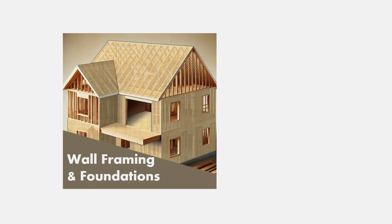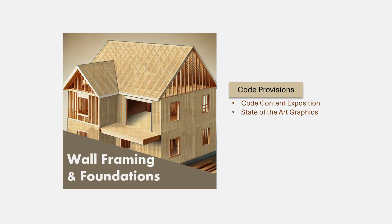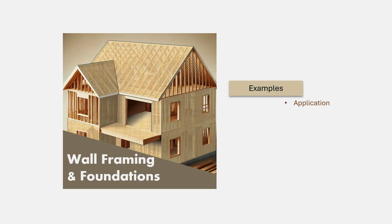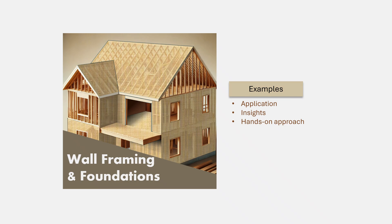This course is carefully designed and crafted to deliver full value, taking you on a learning journey that consists of three carefully structured and exceptionally delivered critical elements. The first element is a comprehensive exposition of the code provisions on conventional wall framing, where we immerse ourselves into the code content using state-of-the-art graphics to bring to life the static code provisions. You will also have access to our quizzes to enhance your learning and broaden your understanding. The second element consists of the use of examples to demonstrate the application of code provisions, uncovering deep lessons and key insights into the rigor necessary for code-compliant design. This hands-on approach shows how the principles discussed are applied in actual projects, helping you connect theory with practice.